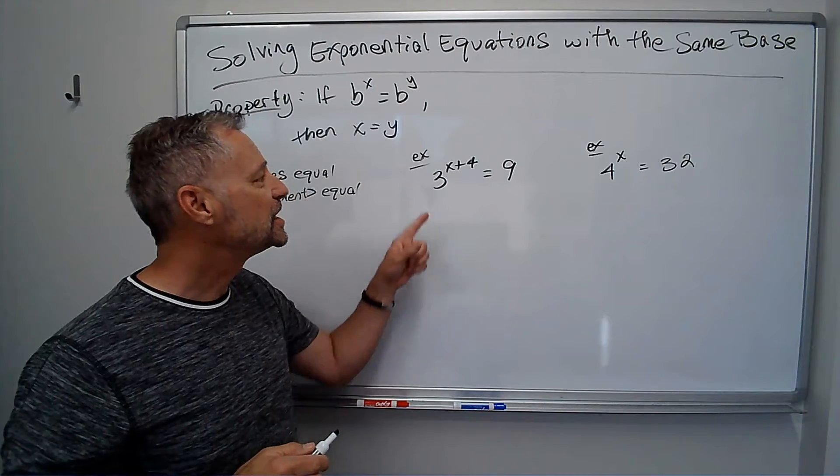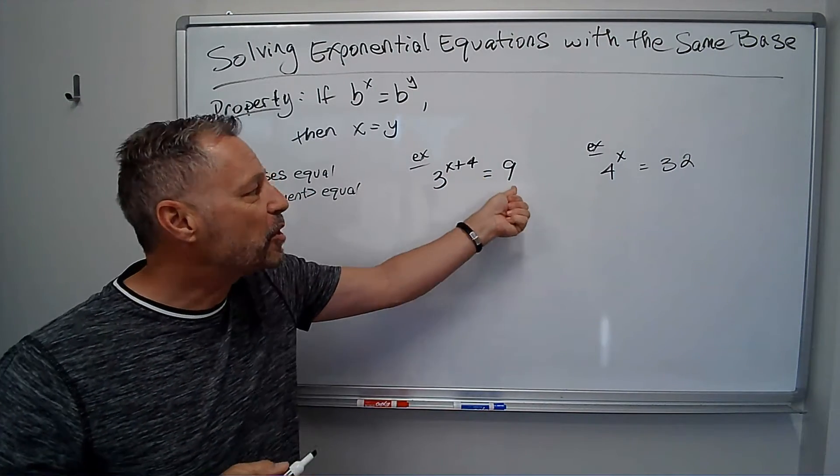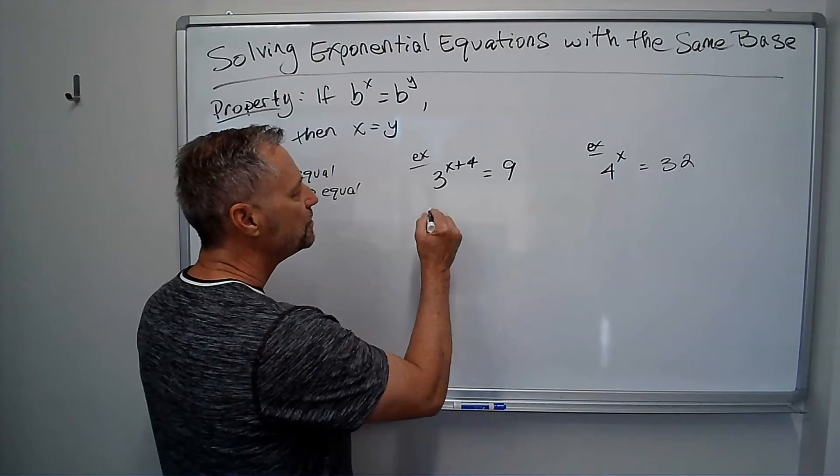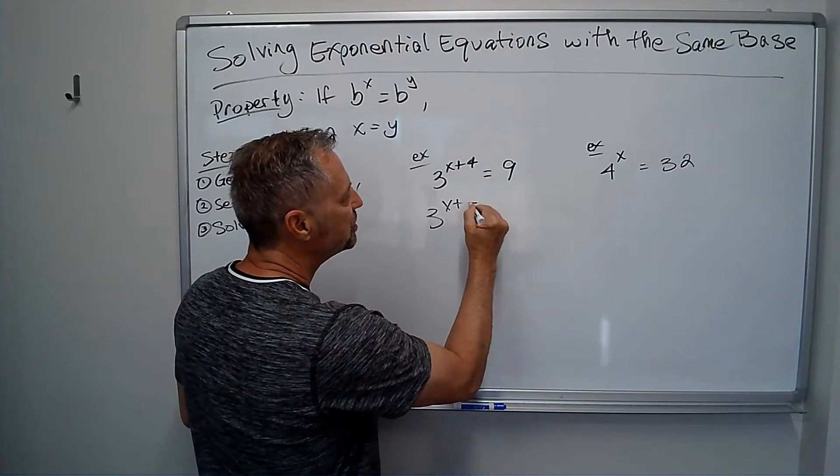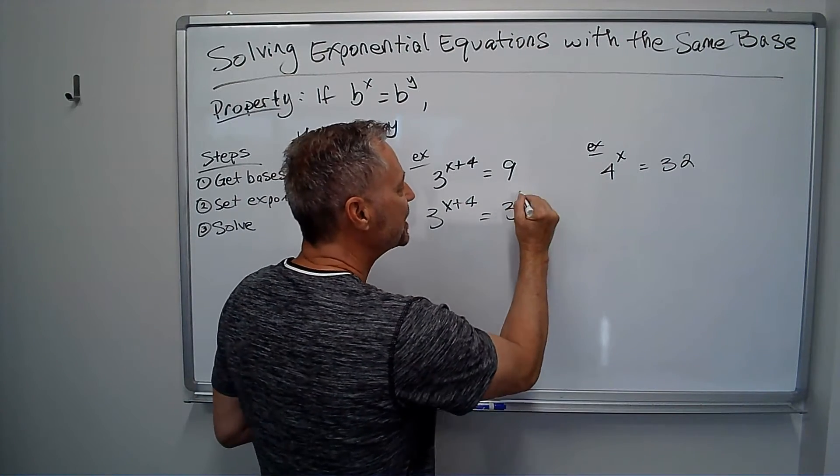Let me show you a couple examples. So I've got 3 to the x plus 4 equals 9. If I can get both of these sides to have the same base, I can use this property. Here I've got 3 to the x plus 4, and over here I know 9 can be written as 3 to the second power.